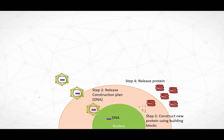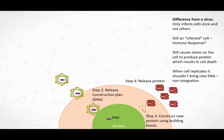Back to our cells. We have it in the body, we've gotten over the antibody issue, it goes into the cell, and instead of virus coming out, proteins come out. The difference from the virus is it only infects the cells once and it doesn't affect others after that. It's still an infected cell, so the immune system might respond. It also causes stress on the cell, which can result in cell death over a longer period of time. When the cell replicates, it shouldn't bring the new DNA with it using an AAV capsid — that's called non-integration.